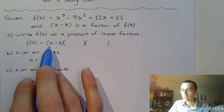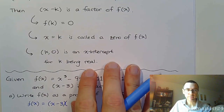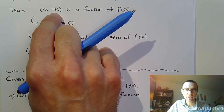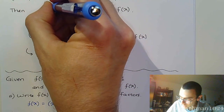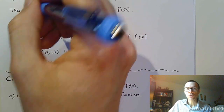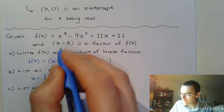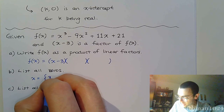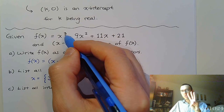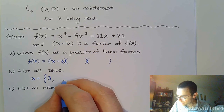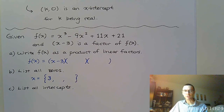So if x minus 3 is a factor, look at the notes above: if x minus k is a factor, that means k itself is a zero. In this form we've got the minus, so when we identify k, we do the opposite of the sign we see. We see negative 3, so one of our zeros is positive 3. Since the degree is 3, we expect three total zeros — we've got one, so we should have two more.